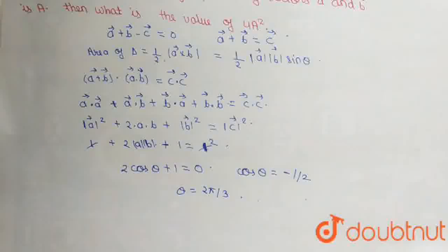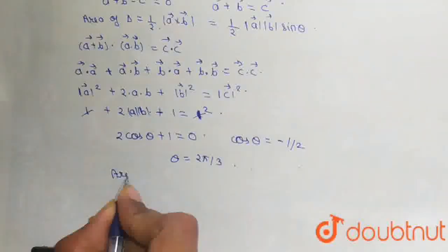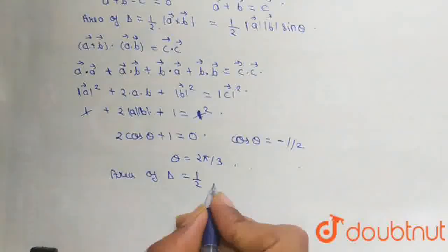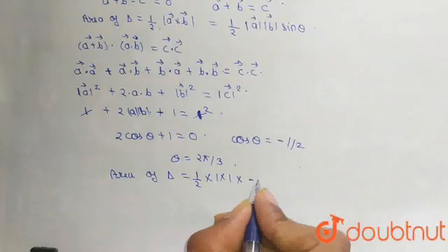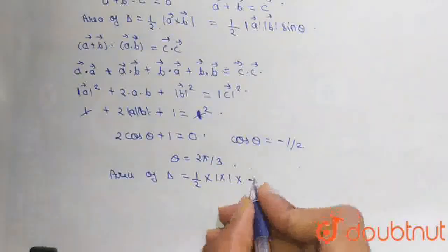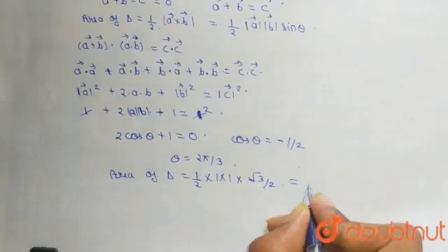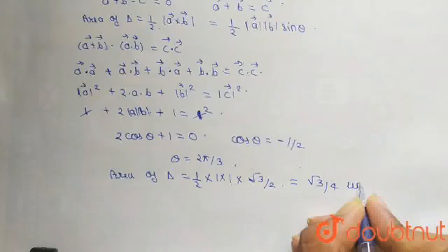Now, what we have to find is the area of the triangle. The area of triangle will be equal to one half times 1 cross 1 times sin(2 pi by 3). Sin(2 pi by 3) is equal to root 3 by 2. When we solve this, we get our area A, which is equal to root 3 by 4 units.